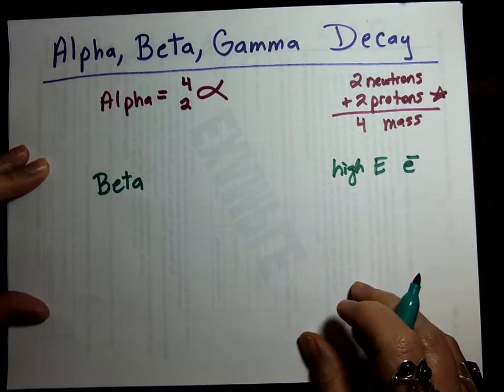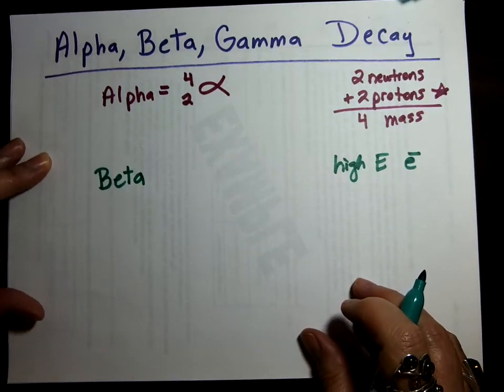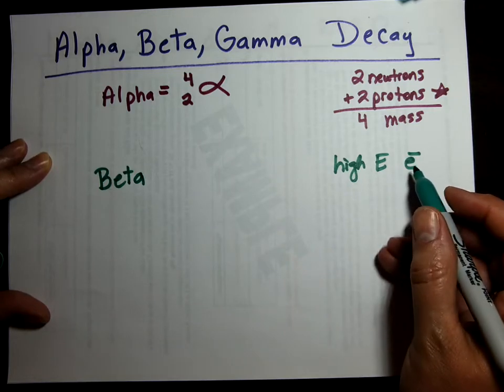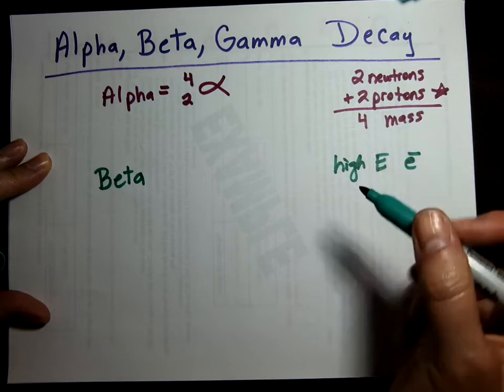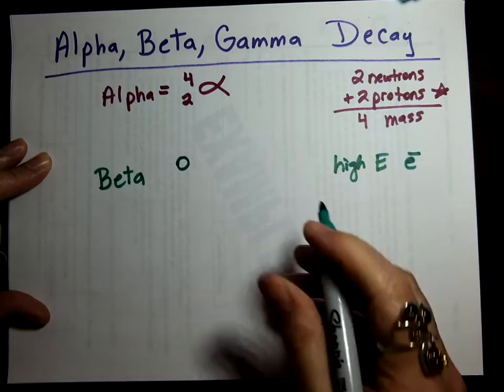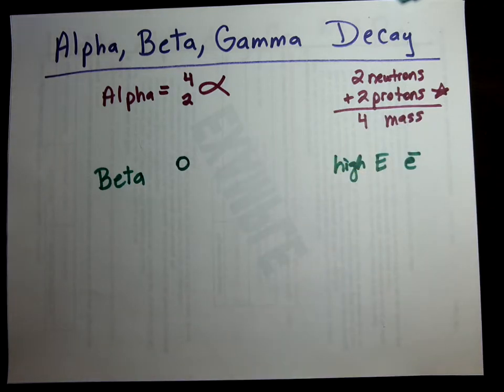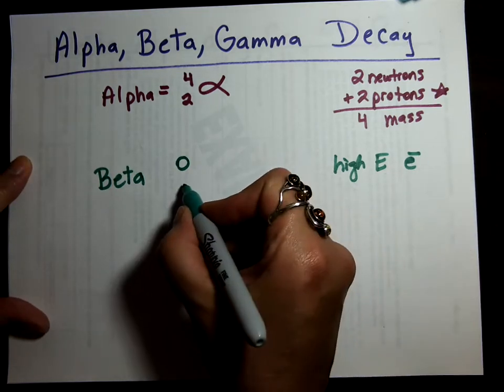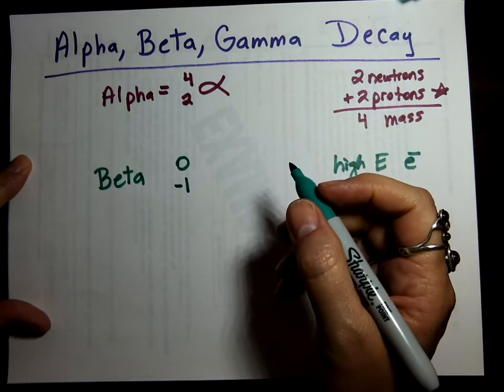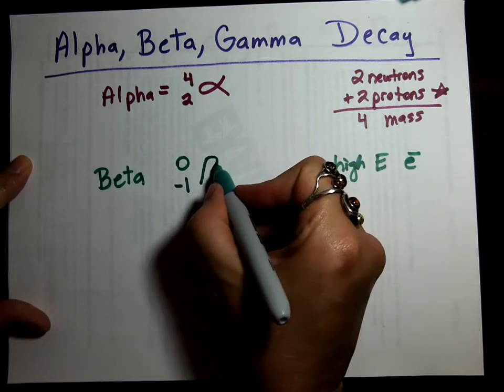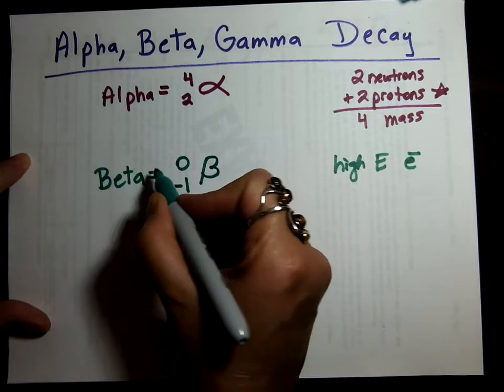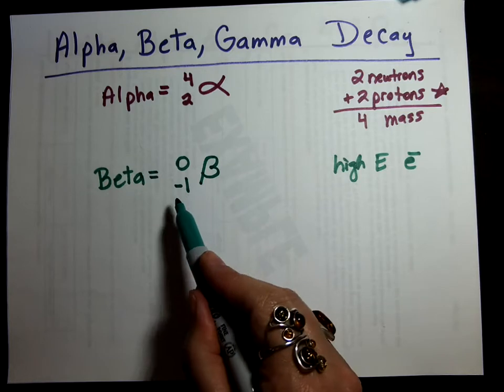So remember, electrons have a negative charge. Now, because it's an electron, there are no neutrons or protons. So the mass is actually zero, because there's no protons or neutrons in an electron. The negative charge makes the bottom number actually a minus 1. And beta is a B with a little tail right there. So a beta particle is 0, -1, beta.